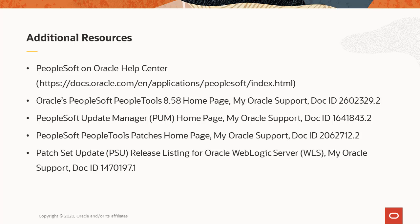Here are some additional resources. The Oracle Help Center for PeopleSoft includes the most recent online help, installation, and upgrade guides, and links to other PeopleSoft portals for all PeopleSoft product lines. The PeopleSoft 8.5.8 homepage in My Oracle Support includes links to the installation and implementation documentation for the current release. Go to the PeopleSoft Update Manager homepage for links to the latest PeopleSoft application update images, documentation, and best practices. Go to the PeopleTools Patches homepage for links to the latest PeopleSoft PeopleTools patches and documentation. You can use the patch set update release listing for Oracle WebLogic Server to find the latest CPU pages for Oracle WebLogic.